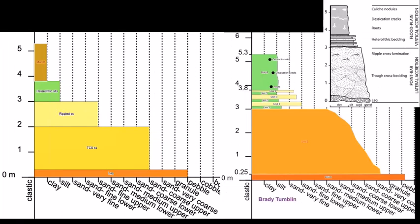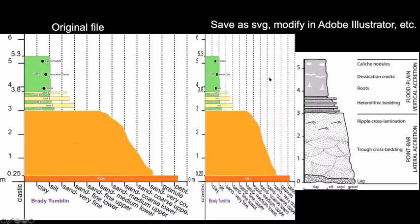We were able to get one participant's example — Brady's — who was willing to share it. His shows a slightly better weathering profile. When you change the weathering profile it may affect some of the data in your description. You could change the horizontal scale to scrunch the section; you can save it as an SVG, modify it in Adobe Illustrator, and use it as a base layer for regular graphical annotations.